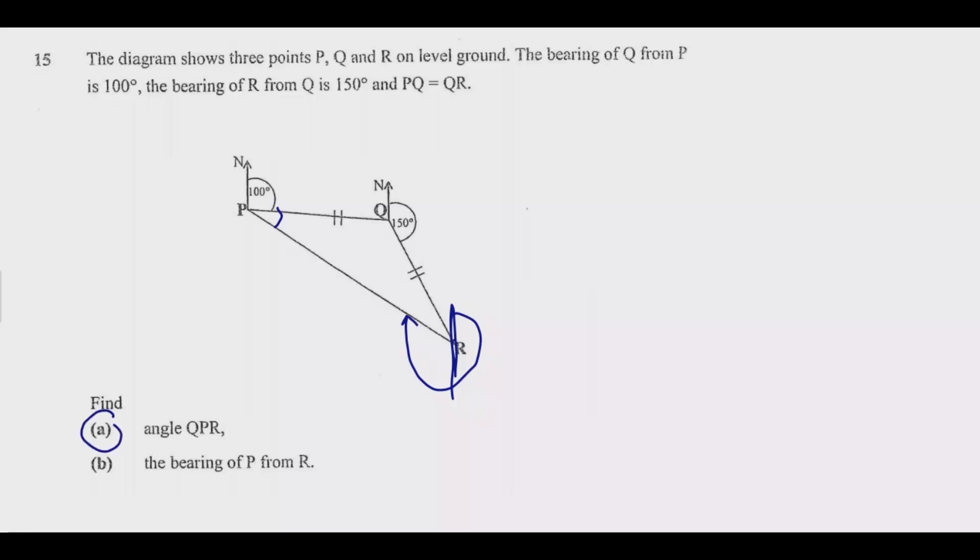For part A, by virtue of the fact that two sides are equal, this angle and this angle are the same. Let's call this angle X and this angle X as well.